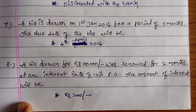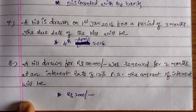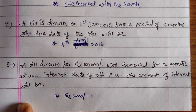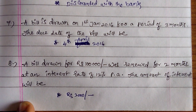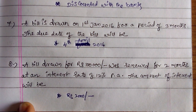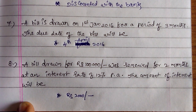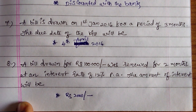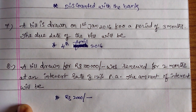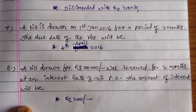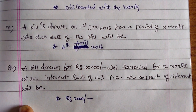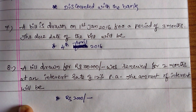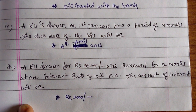Next one: a bill drawn on 1st January 2016 for a period of 2 months. The amount of interest will be just 2,000 rupees only, because 1,00,000 into 12% for 2 months equals 2,000 rupees.